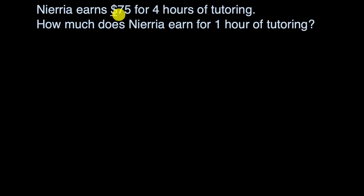Well, the key here is $75 for four hours of tutoring. And there's a couple of ways you could think about it. The ratio here is $75 for every four hours. So if you wanted one hour of tutoring, well, it's just going to be one fourth of the $75, or you could just take 75 and divide by four.